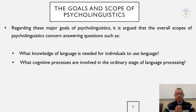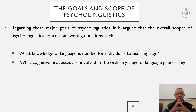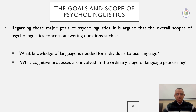Now let us move to the third point — the goals and scope of psycholinguistics. The overall scope of psycholinguistics concerns answering two main questions. Question one: what knowledge of language is needed for individuals to use language? Question two, which is more precise: what cognitive or mental processes are involved in the ordinary use of language? Question two is very fundamental because it goes to the core of psycholinguistics.